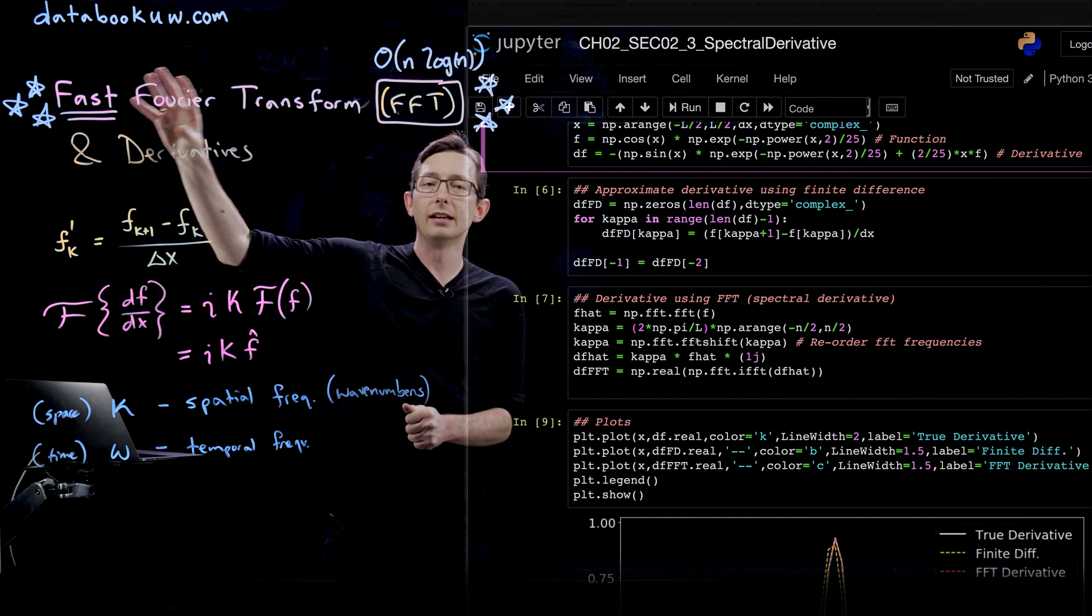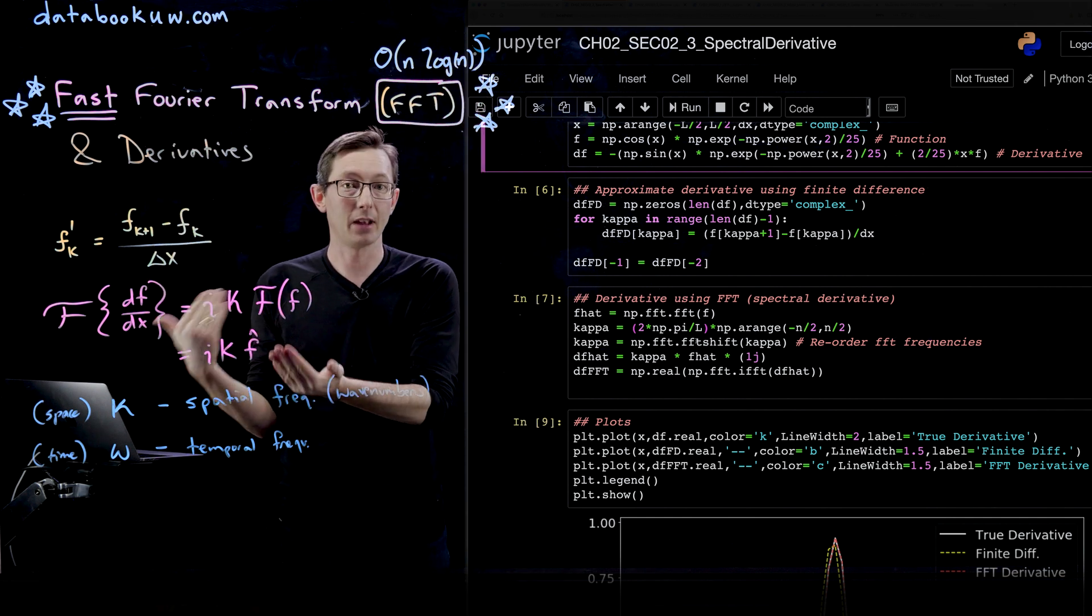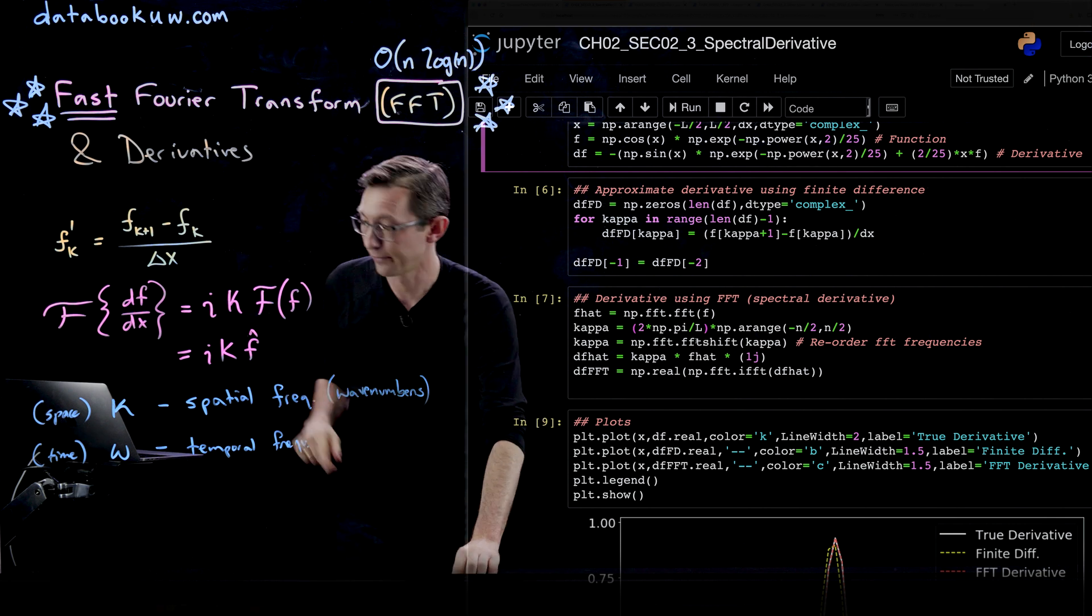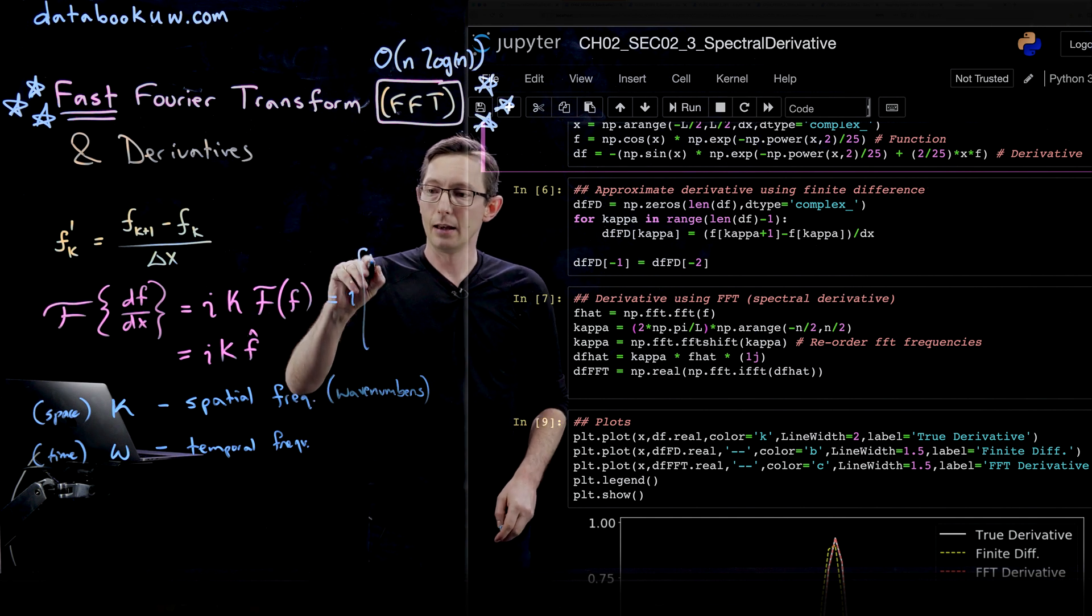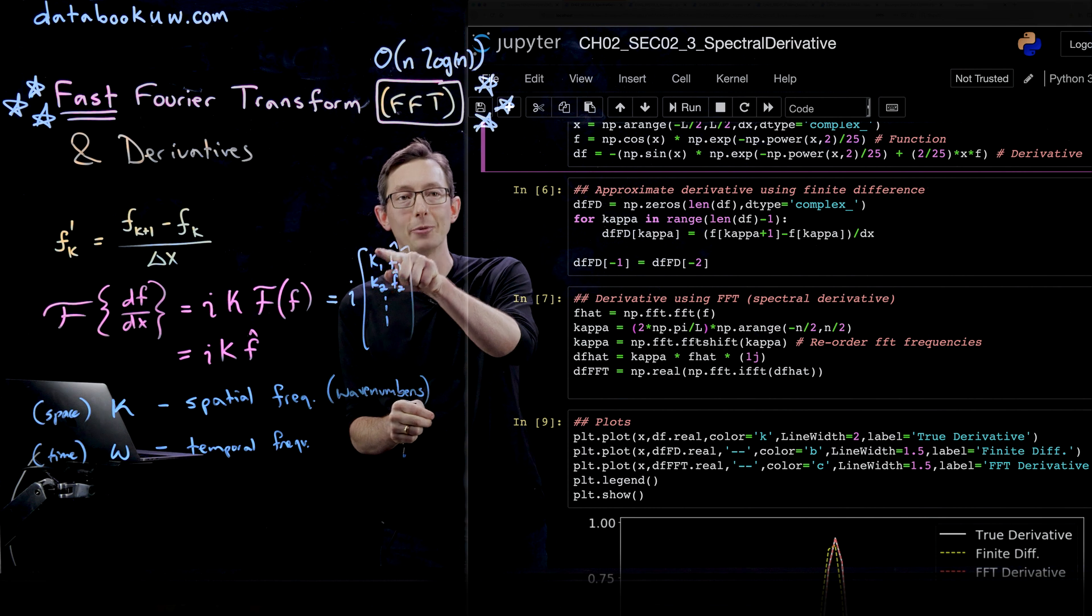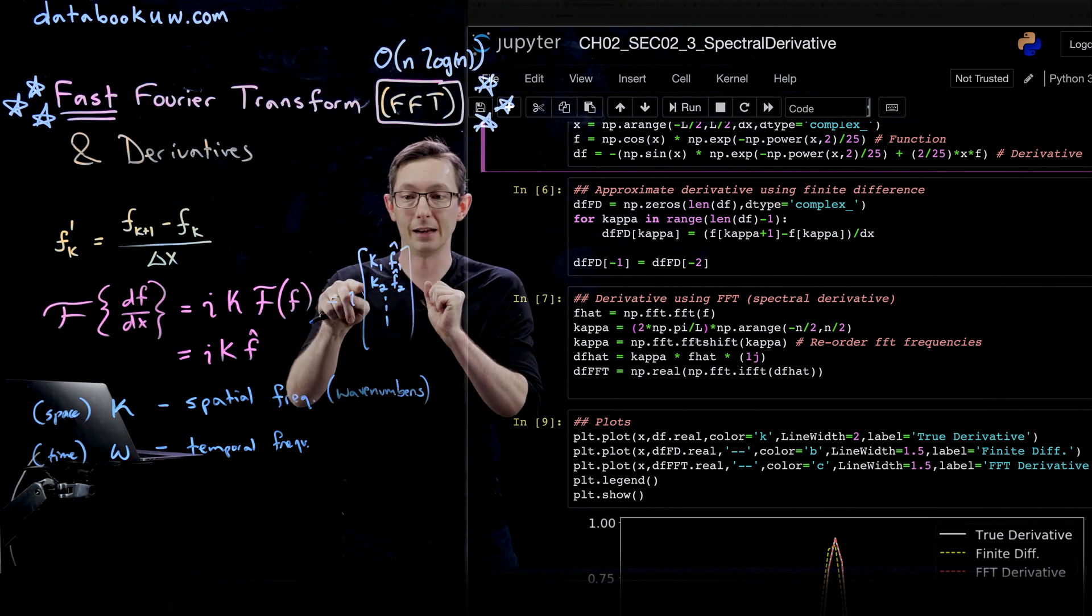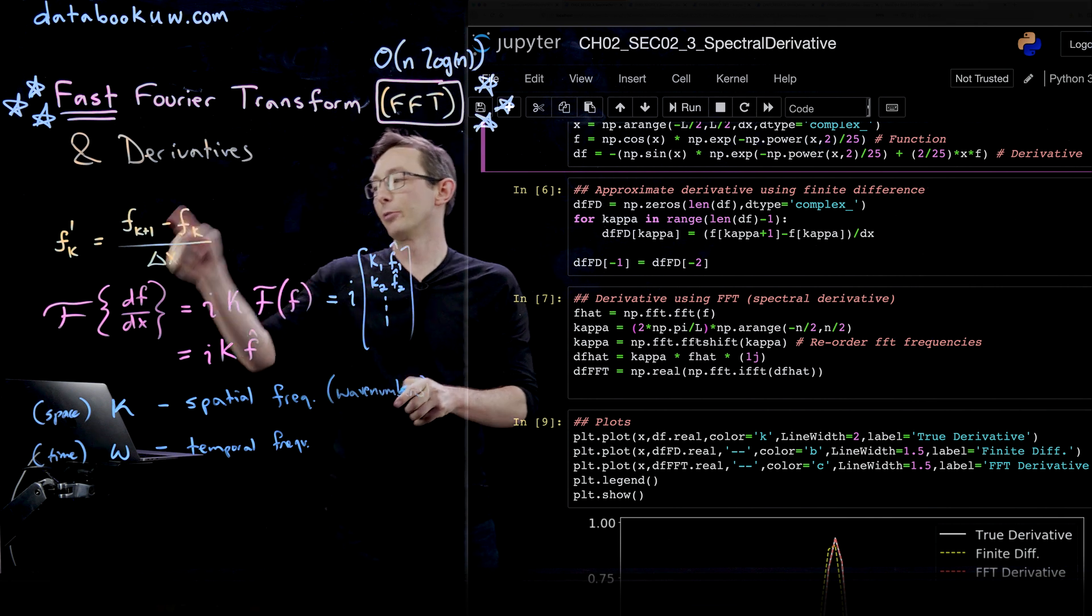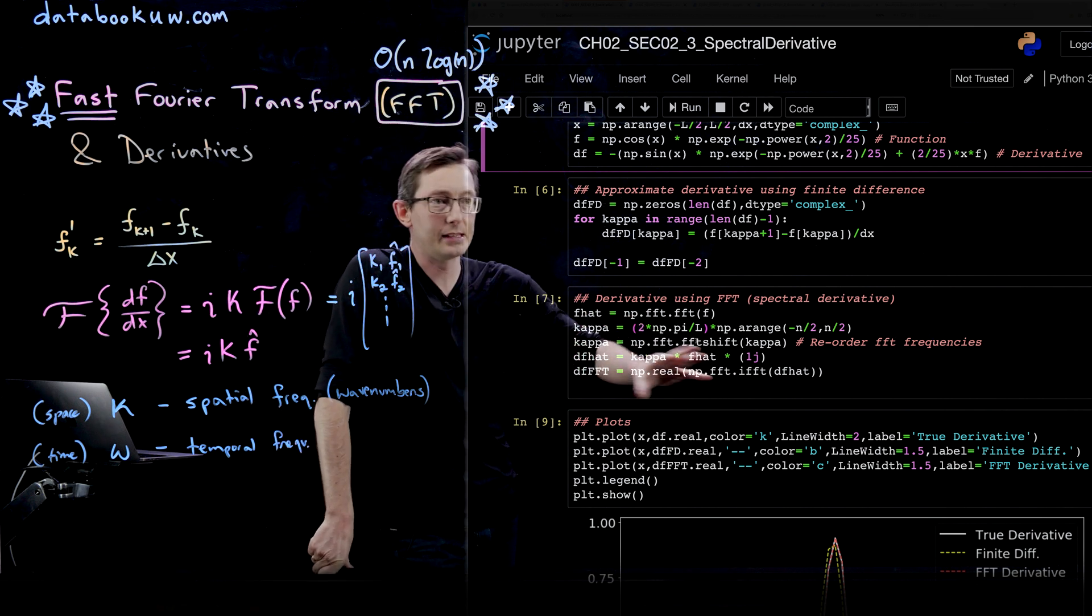This is what you would do with the continuous Fourier transform or Fourier series. But it's more interesting in the data case. If I have a vector of data and I'm doing the fft, then f hat is a vector of Fourier coefficients and kappa is a vector of frequencies. In the dft world or fft world, you take i, kappa 1, f1 hat, kappa 2, f2 hat, and so on. I take every frequency and multiply it by its corresponding Fourier coefficient and create a vector of frequency weighted Fourier coefficients times i. If I inverse Fourier transform this vector, if I take the ifft of this, I recover the derivative of my data at those discrete sample points.